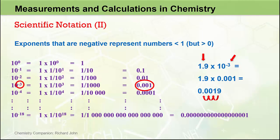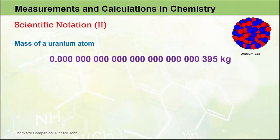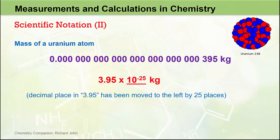You may recall from the previous video that the mass of a uranium atom is a very small number in kilograms. To convert this number into scientific notation, we first write down the coefficient 3.95 — identifying it by ignoring all the initial zeros until we come to the first non-zero number, and placing the decimal point after that first non-zero digit, remembering it can never be zero. We then count to the left to see how many places we have to move the decimal place to regenerate the original number. In this case, we have to move the decimal place 25 places to the left. Moving a decimal place to the left represents a negative exponent, so this quantity is best expressed as 3.95 times 10 to the minus 25 kilograms — a very, very small number, still greater than zero, but much less than one.